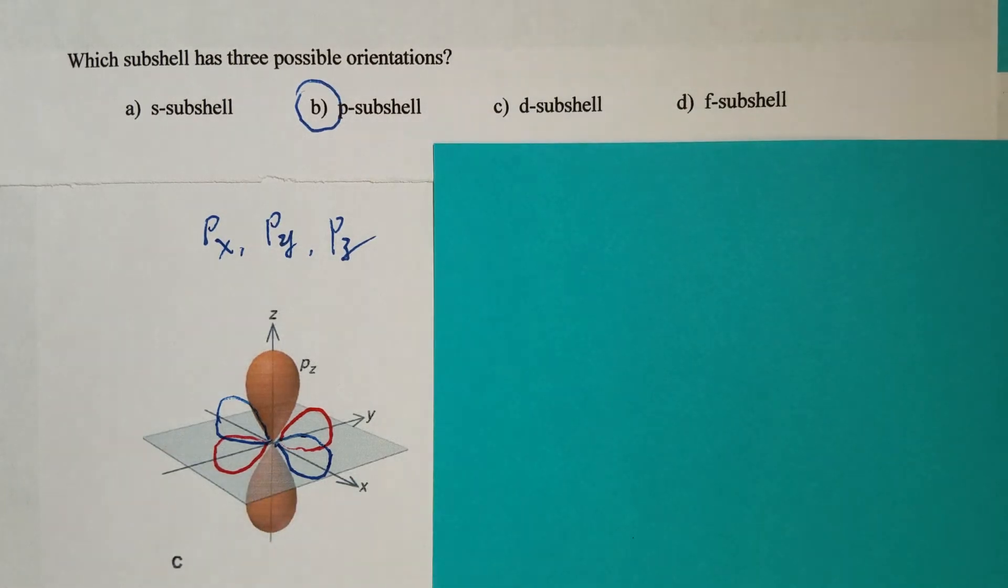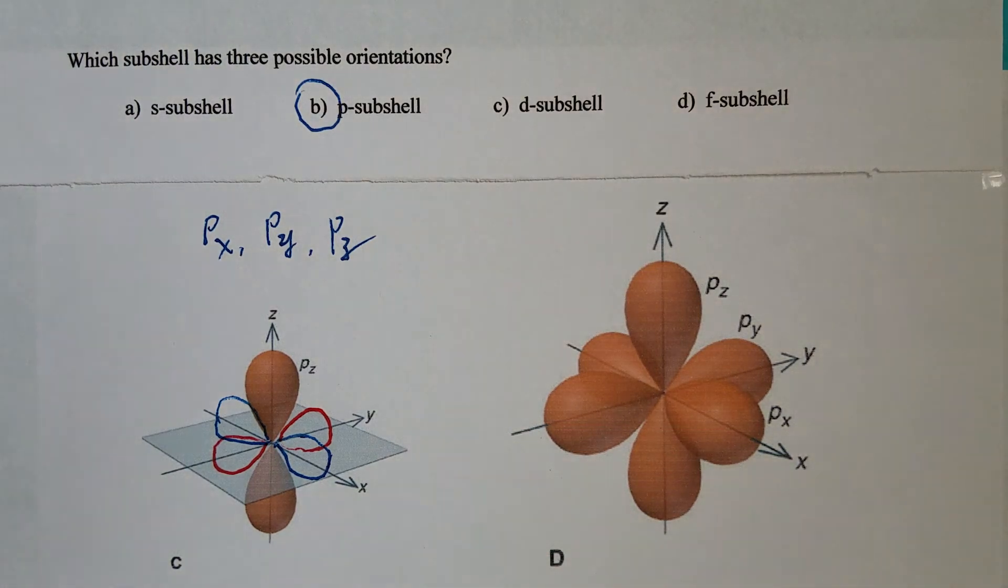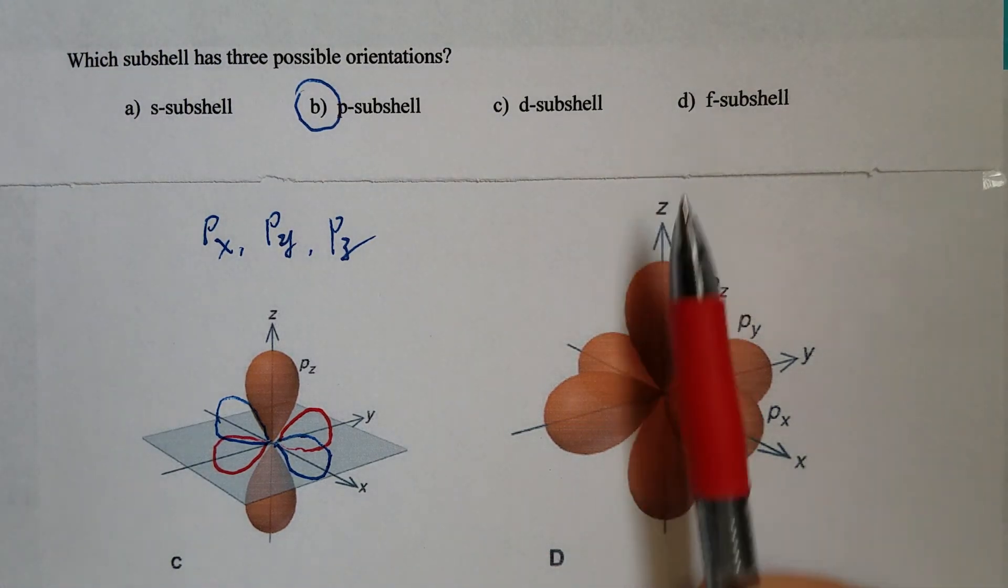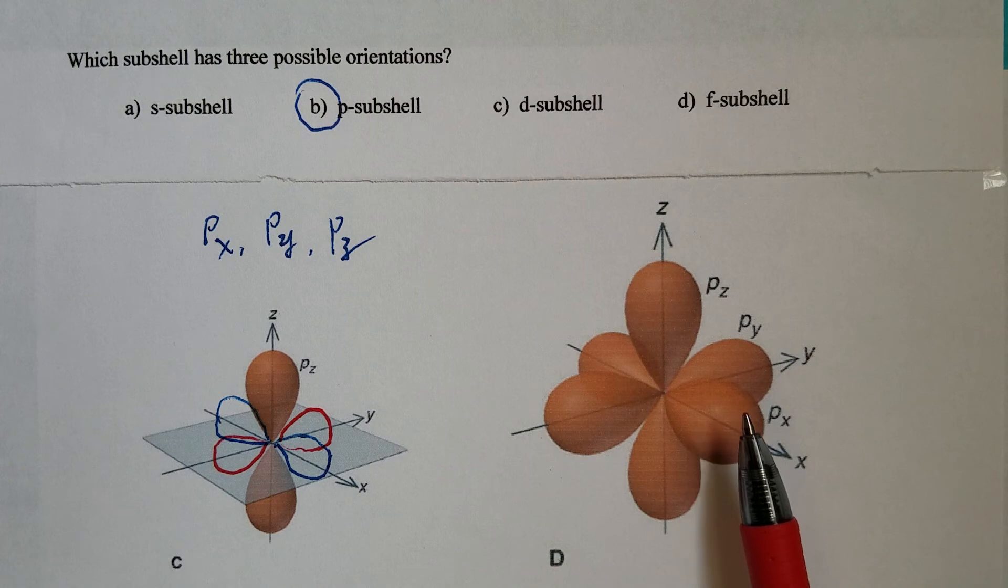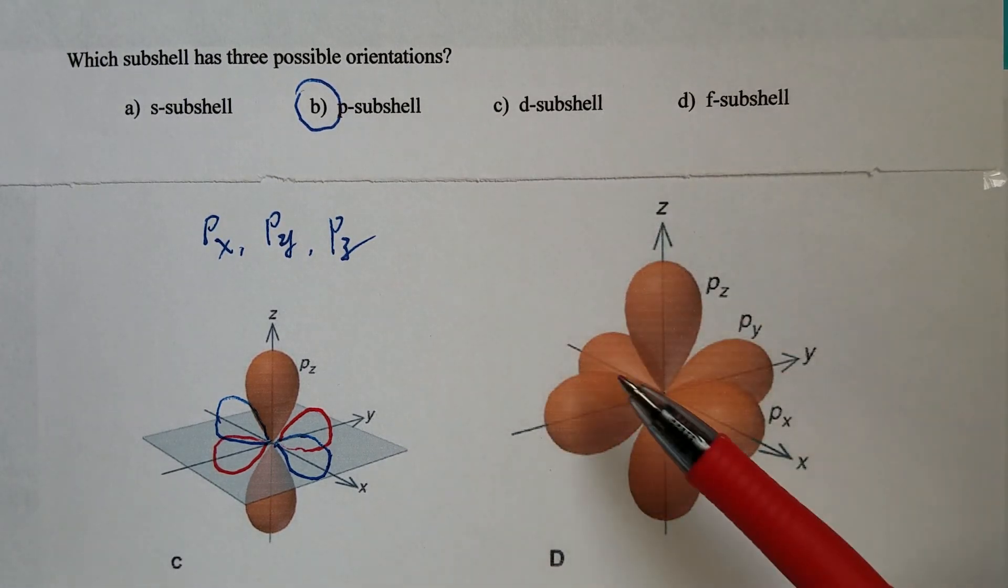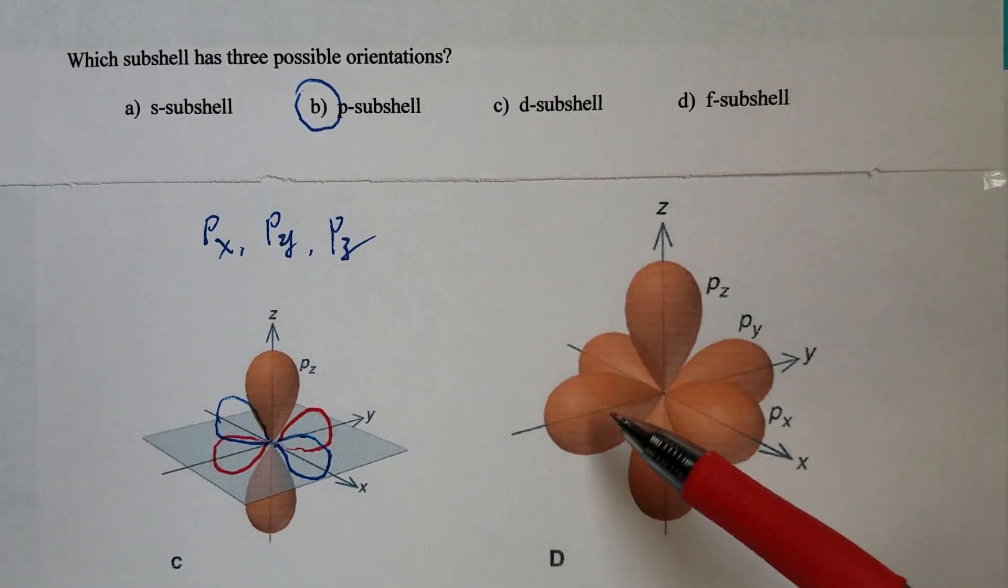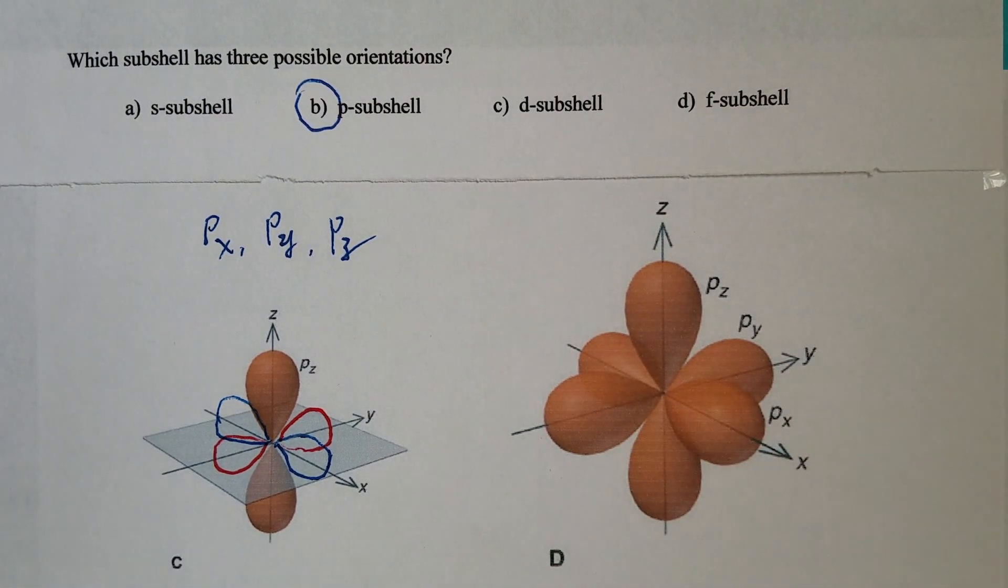And if you put all of it together, the p orbital would look like this. Pz is the vertical. Px and Py are the horizontal. But Px is this way, and that's Py. That's it for this question.